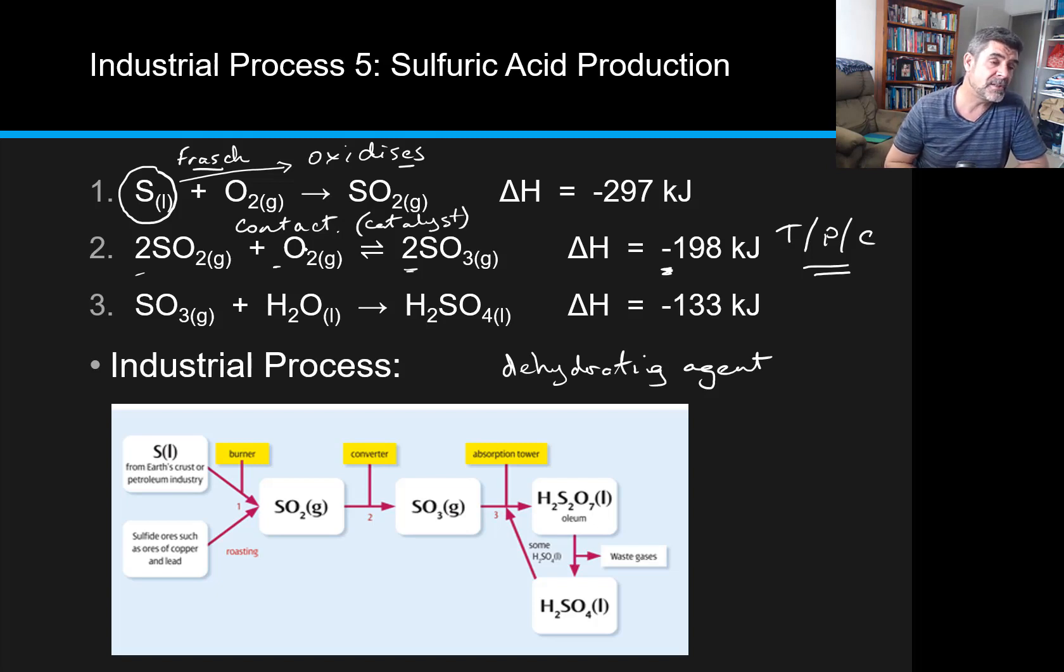The third step is to turn the sulfur trioxide, the SO3, into sulfuric acid. Now this can be a very dangerous process, and so often there's a step in between the conversion of sulfur trioxide and the production of sulfuric acid, and that produces another little product called oleum.